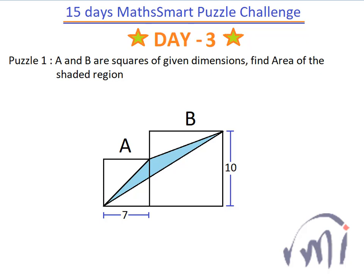Hi friends, this is the third day of the 15 Days of MathSmart Puzzle Challenge, and here we have a few area-related puzzles. The first puzzle: A and B are squares of the given dimensions, and we have to find the area of the shaded region. You can note on this puzzle, and after this we have two more puzzles based on the same topic.